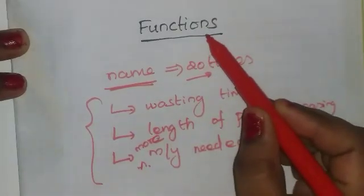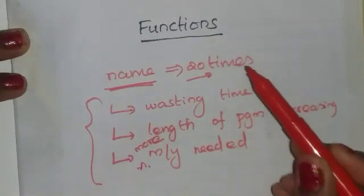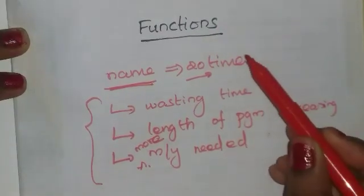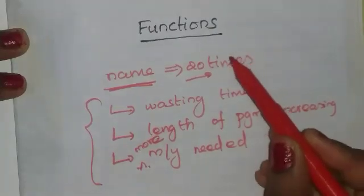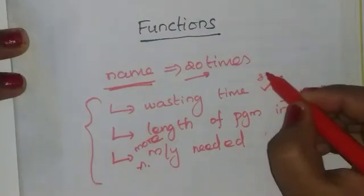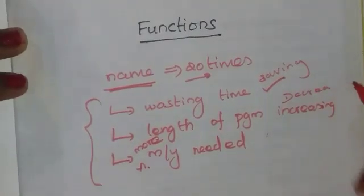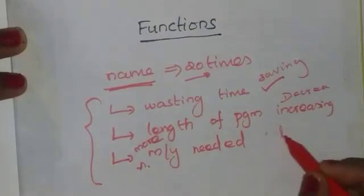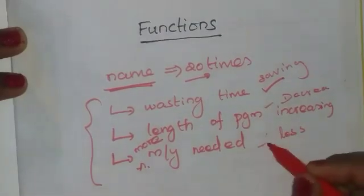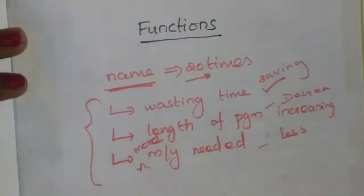You can create one function, and that function will print your name. If you want to print your name 20 times, you just make a call to that function. By doing this, you are saving your time, the length of the program decreases, and it requires less memory space. This is the main concept of the function.